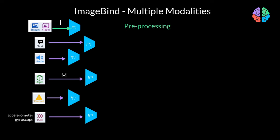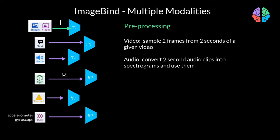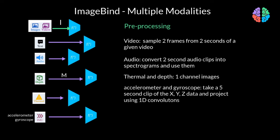Because the inputs are in different forms, they do slight pre-processing before feeding them into the deep networks. For example, when dealing with videos, they sample two frames from two seconds of a given video. With audio, they convert two-second audio clips into MEL spectrograms. Thermal and depth images are treated as one-channel images. For IMU, which has accelerometer and gyroscope measurements with X, Y, and Z dimensions, they take a five-second clip of the data and project it using 1D convolutions, which are then fed into a transformer architecture.